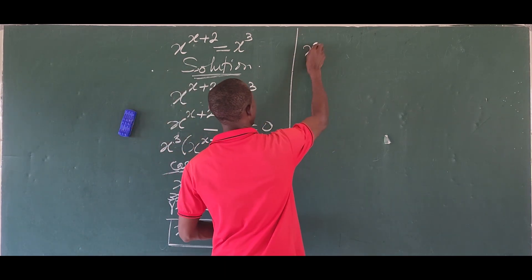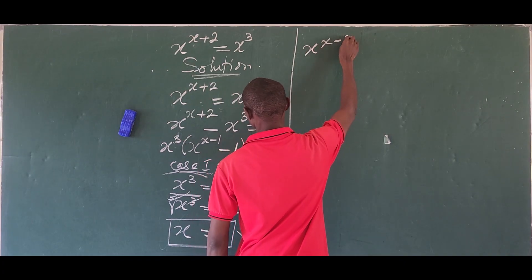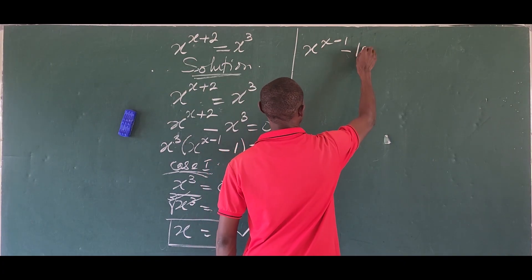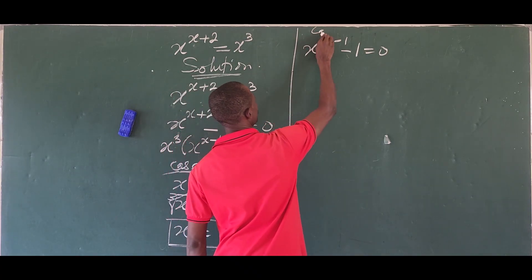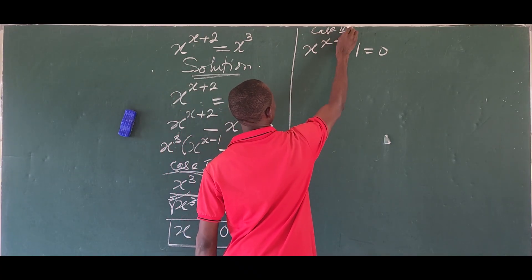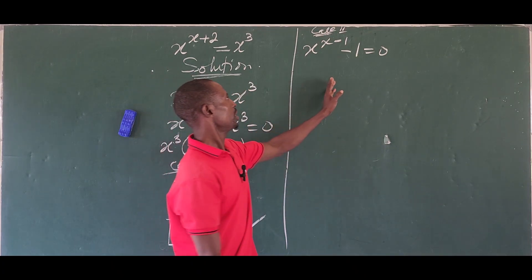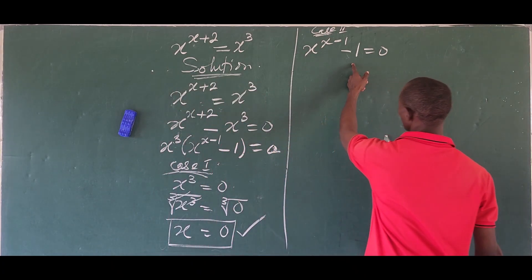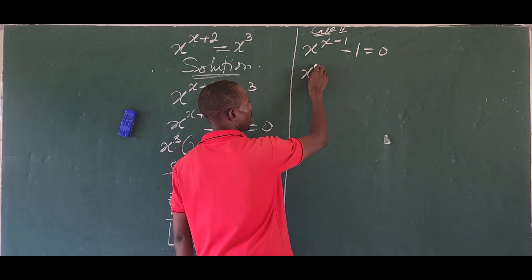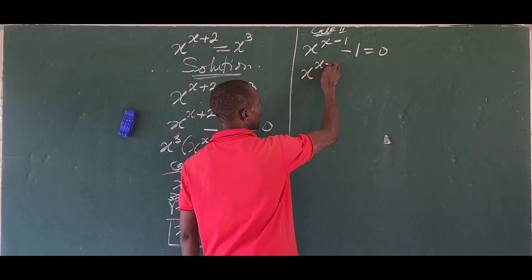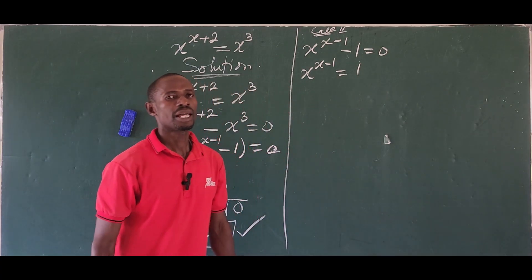Now for Case 2: we have x to the power of x minus 1, minus 1, equals 0. We move the minus 1 to the right side of the equation, giving us x to the power of x minus 1, equals 1.